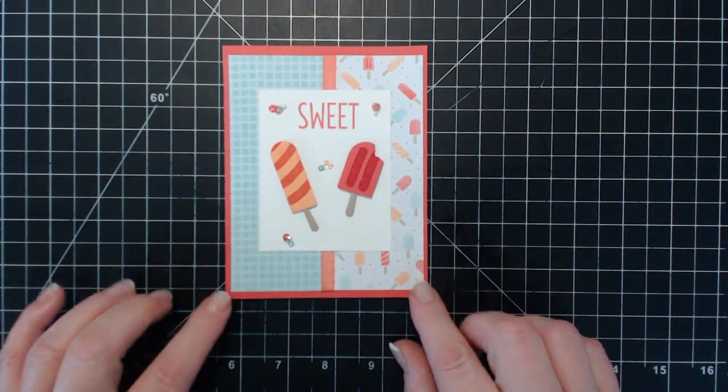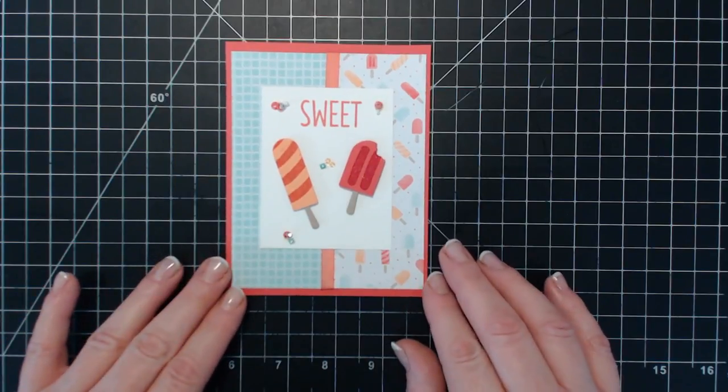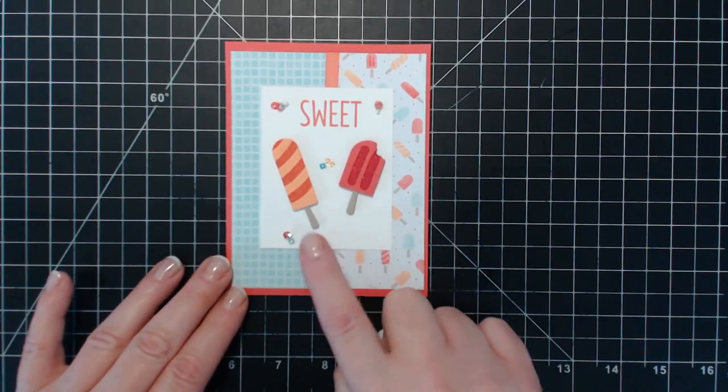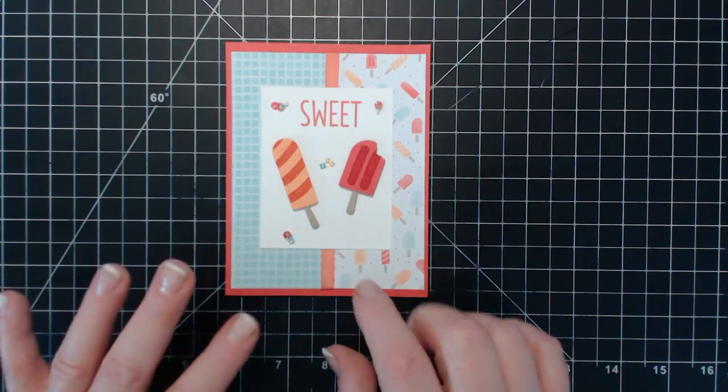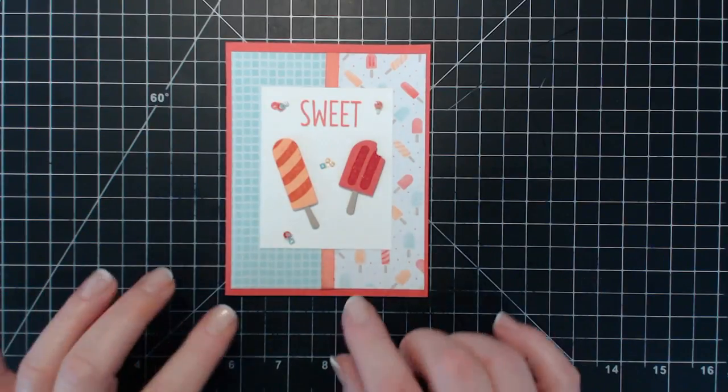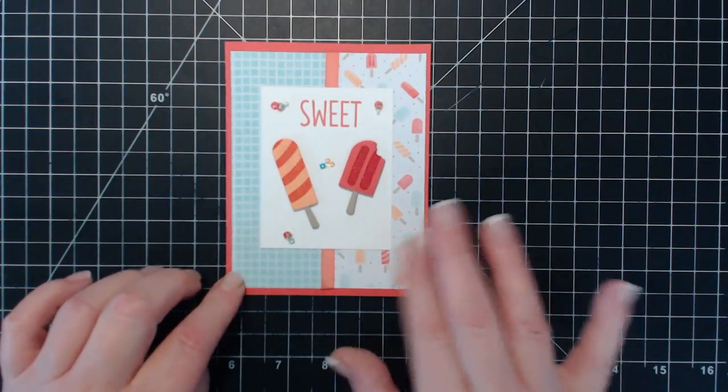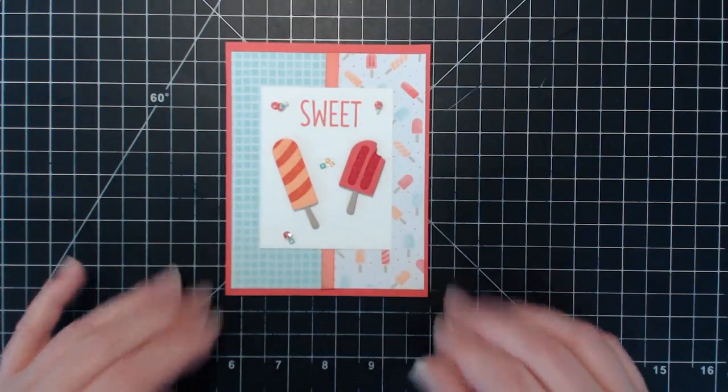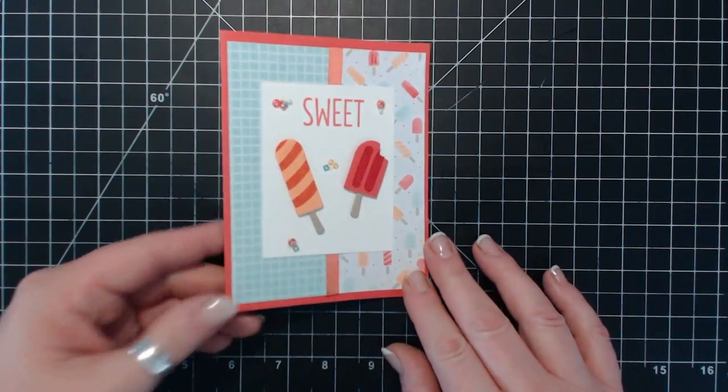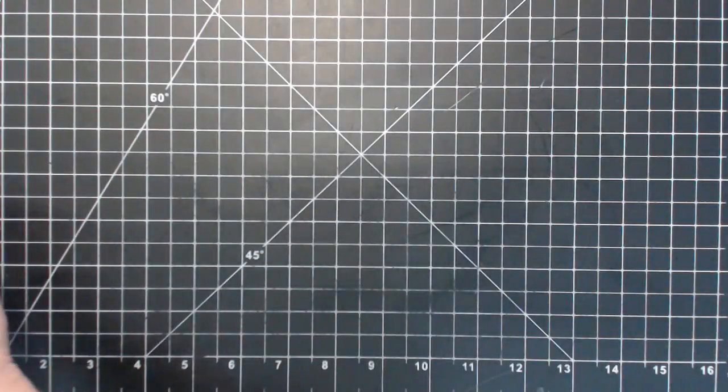This is from Kathy Clark, she's also a Canadian. She's using the Cool Treats stamp set and the thinlit dies and some of the paper. Can't get the paper anymore, but the layout is really cute.